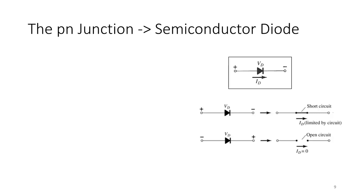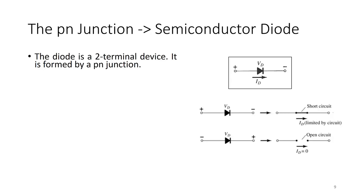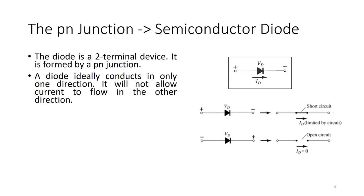With just a single PN junction, you already have a device called the semiconductor diode. The diode is a two-terminal device formed by a PN junction. A diode ideally conducts in only one direction — it will not allow current to flow in the other direction. It allows current to flow from the positive terminal to the negative terminal. In the diode symbol, the triangle side is the positive terminal (anode) and the line side is the negative terminal (cathode).